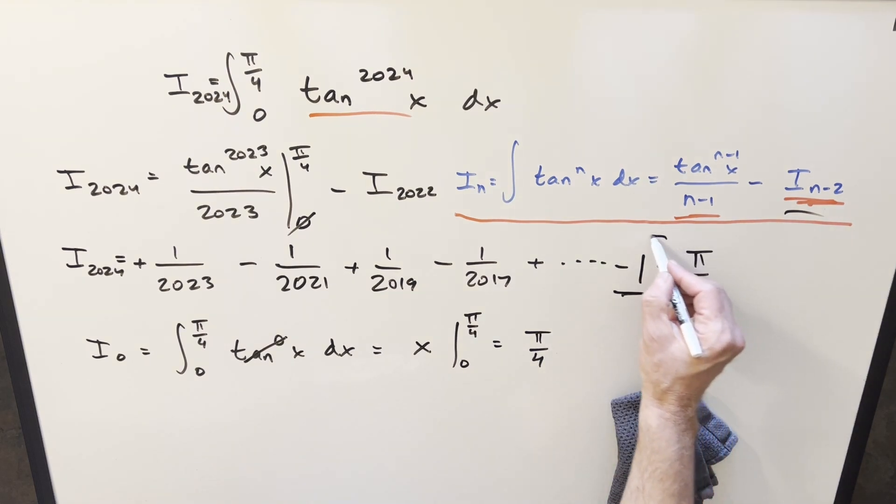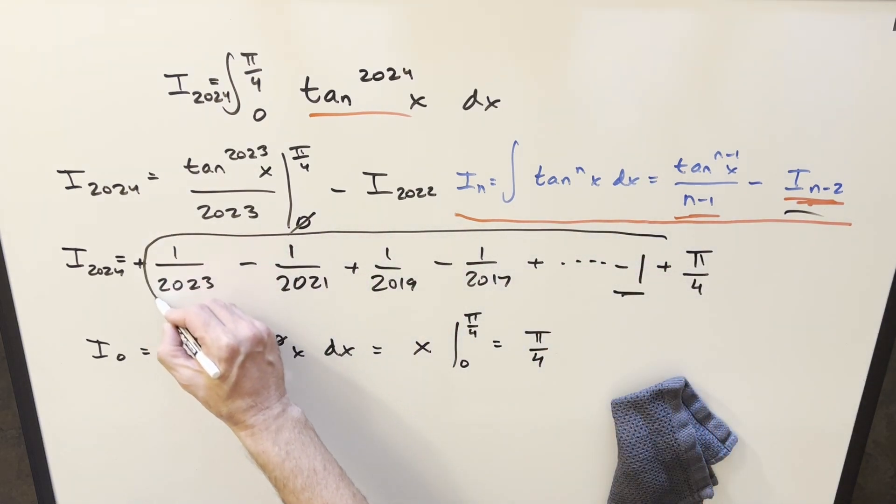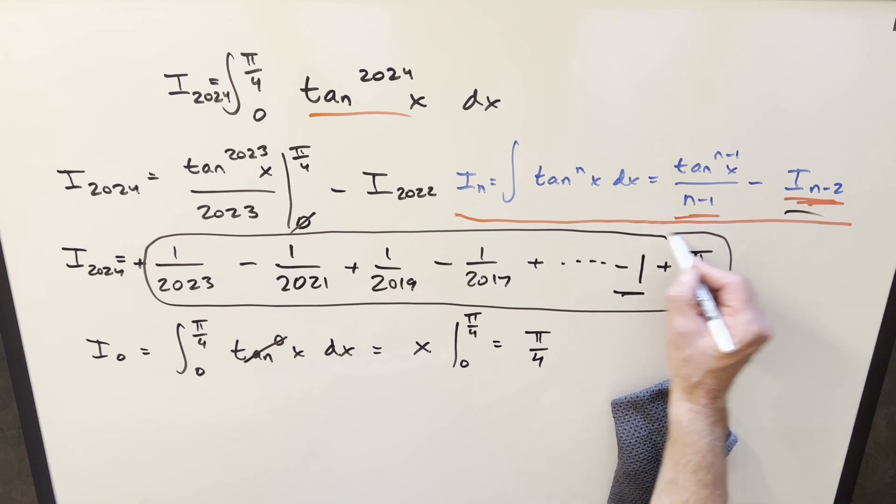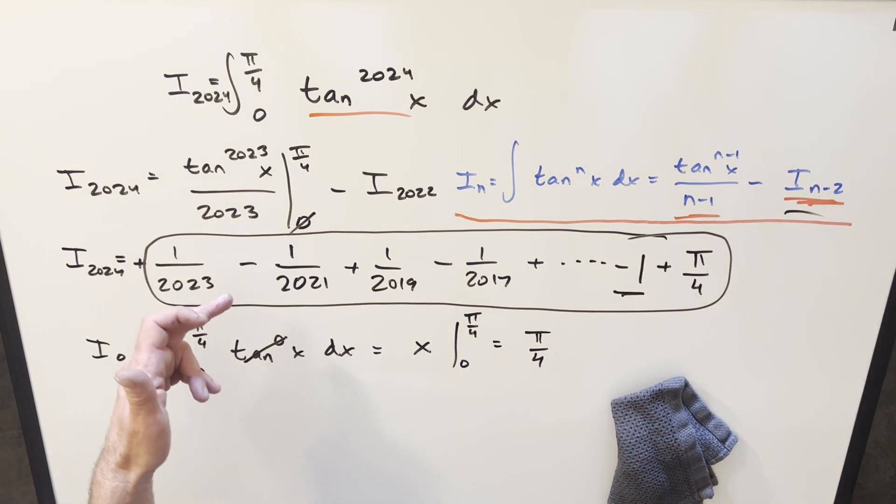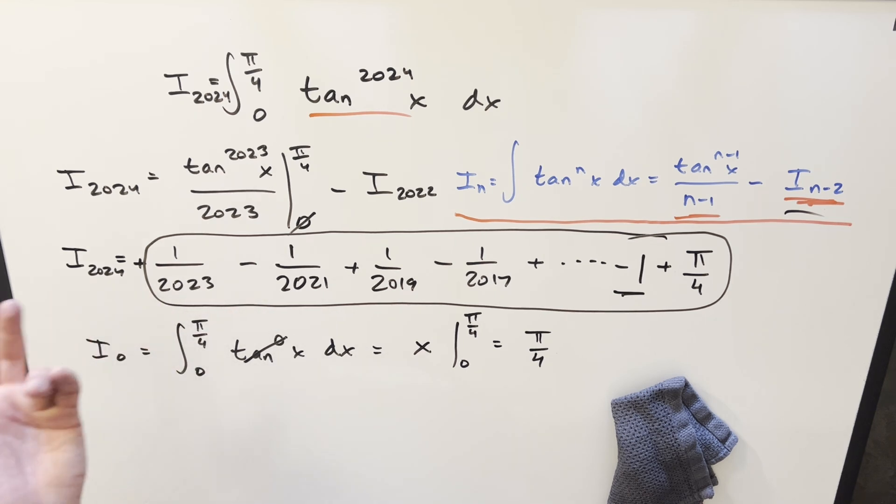So let's just plug pi over 4 back into what we found here. And so for my solution to this, we just get this whole long mess right here. But the question is, can we do a little bit better? Is there a way to get some numeric value for this without pulling out the calculator and calculating 1,000 terms or whatever?